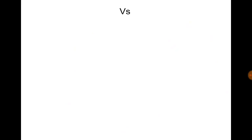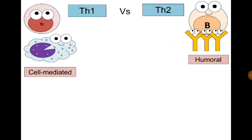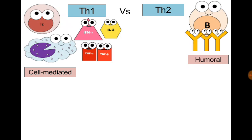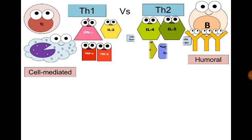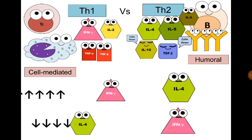In summary, there are two teams: T helper 1, which activates cell-mediated immunity, and T helper 2, which promotes humoral immunity. T helper 1 most important cytokines are interferon gamma, interleukin-2, and pro-inflammatory tumor necrosis factor alpha and beta. T helper 2 most important cytokines are interleukin-4, interleukin-5, and anti-inflammatory interleukin-10 and transforming growth factor beta. T helper 1 response is promoted by interferon gamma and inhibited by interleukin-4. T helper 2 response is promoted by interleukin-4 and inhibited by interferon gamma.